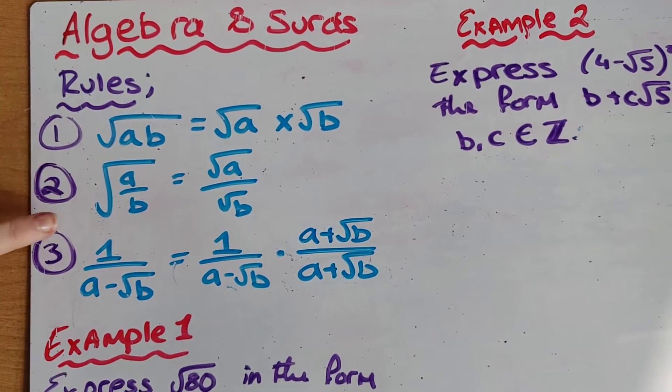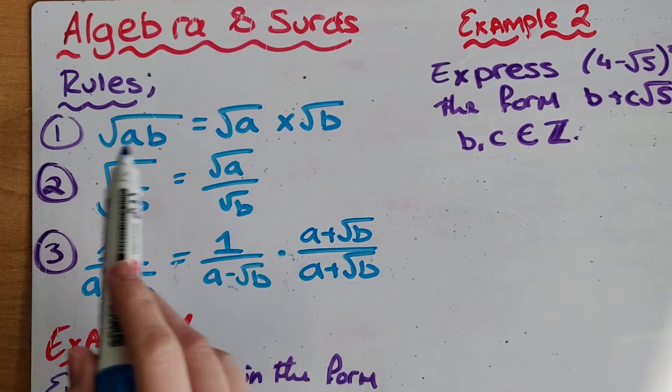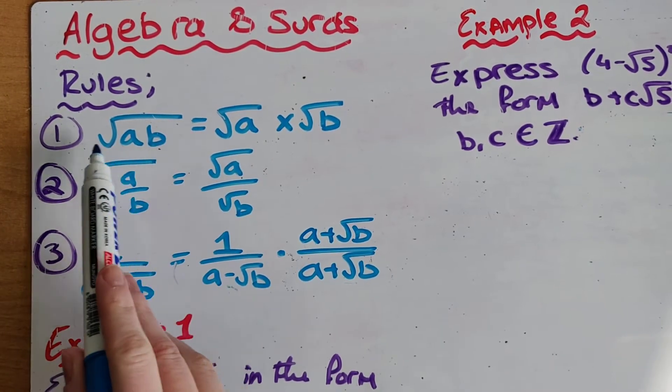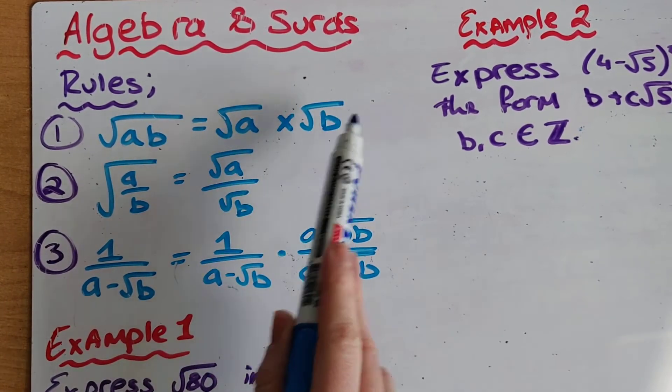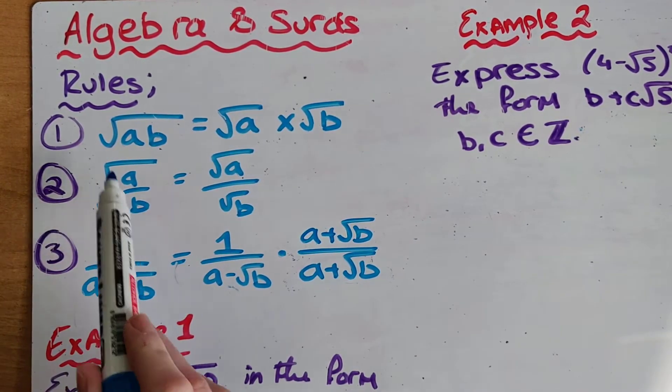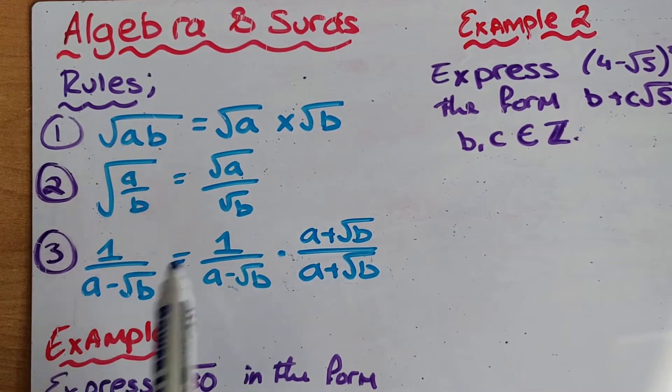Now we have three rules to do with surds which we need to be careful to remember because the three rules aren't in the log tables. So our first rule is the square root of ab is equal to the square root of a times the square root of b. The second rule is the square root of a over b is equal to the square root of a over the square root of b.